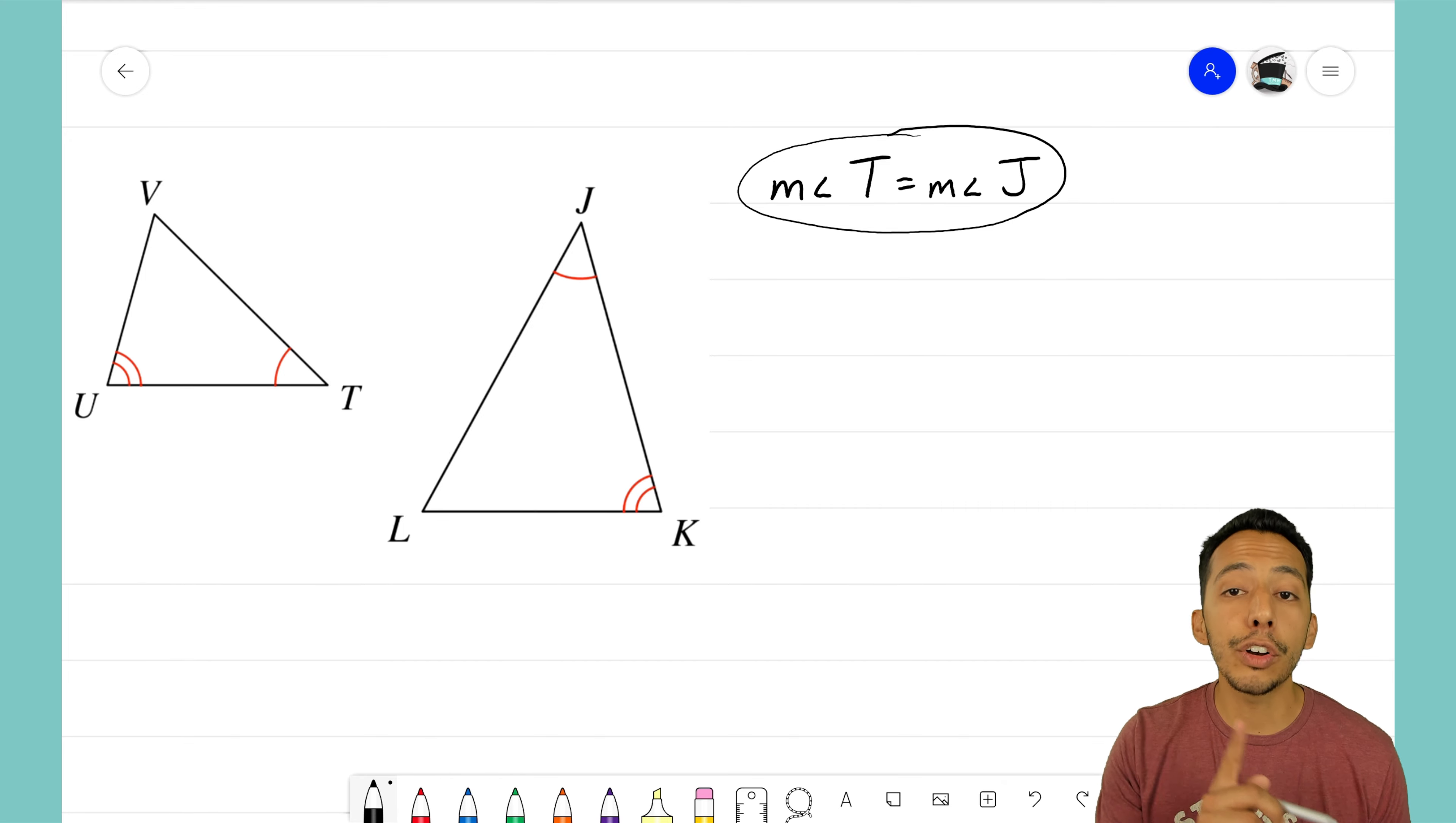Now that's just one angle—I need a second pair of angles. I think we have it: the measure of angle U is equal to the measure of angle K. Again, I'm just going off what the picture tells me. The picture is telling me that U and K are equal. That is our second fact, and that is enough to say that these two triangles are similar.